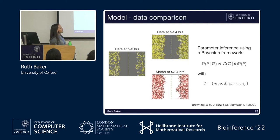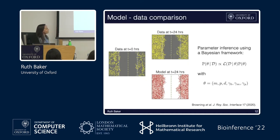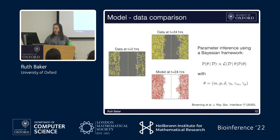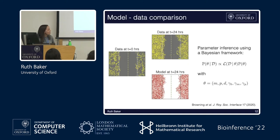To connect the model with the data, we initialize the model from images at time t = 0 hours, simulate forward to 24 hours, and then compare model output to data at 24 hours to learn about the model parameters. We have six parameters: basal movement, proliferation, and death rates; a bias parameter; and two terms encoding how motility and proliferation are impacted by local cell density. We want to work in a Bayesian framework — estimating the posterior distribution of model parameters theta given data d, accessed through the product of the likelihood of data d given parameters theta and the prior distribution.